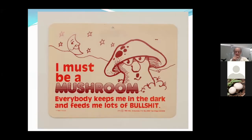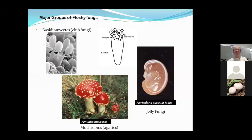Most people think of mushrooms in the conventional way. When we get started, the first thing you've got to determine when looking at these fungi is which of the two main broad groups they belong to. Most of what we consider mushrooms fit in a group called the Basidiomycetes — the word relates to the reproductive structures, which are microscopic.